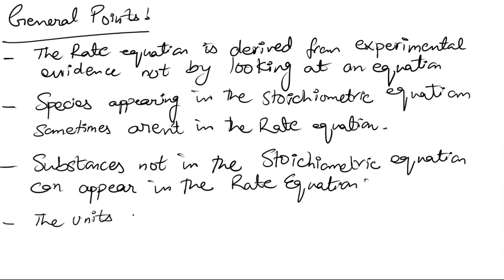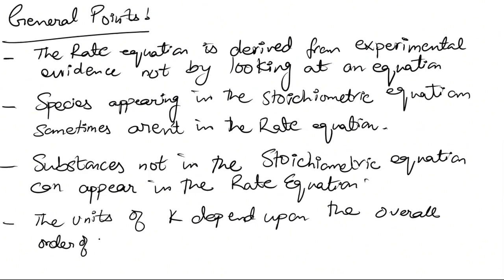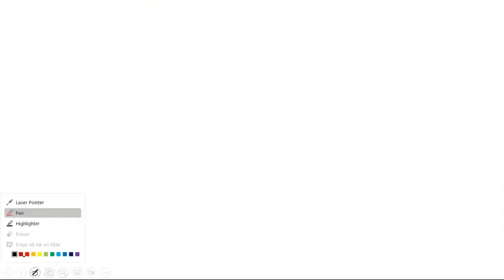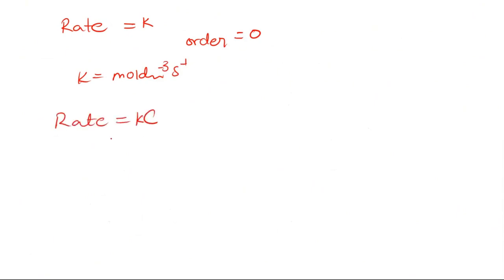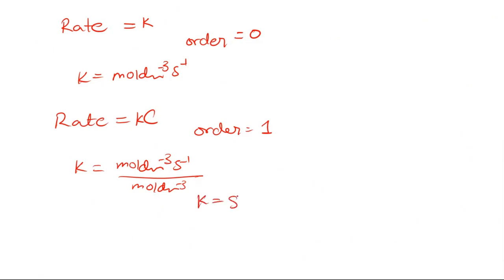The units of k depend upon the overall order of the reaction. For order equal to zero, rate equals k, so k equals mol dm⁻³ s⁻¹. For order equal to 1, rate equals k times c, so k equals mol dm⁻³ s⁻¹ divided by mol dm⁻³, giving k equal to s⁻¹.